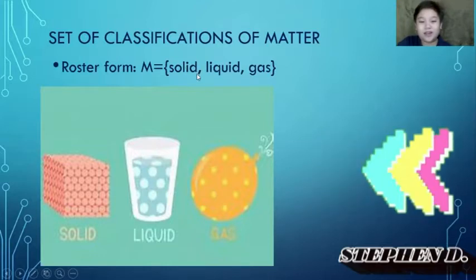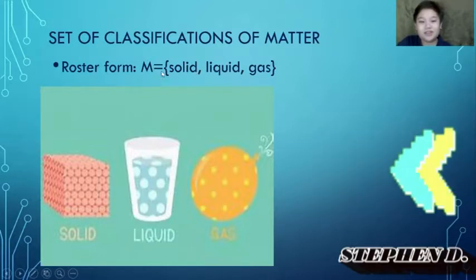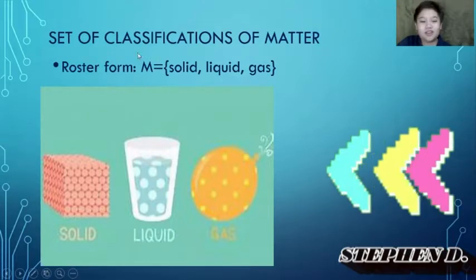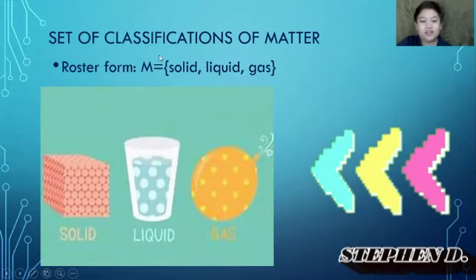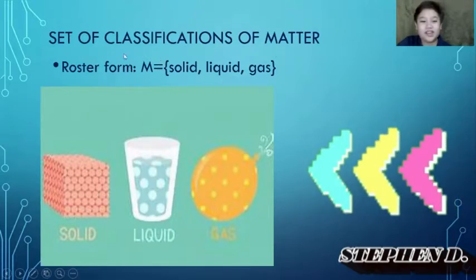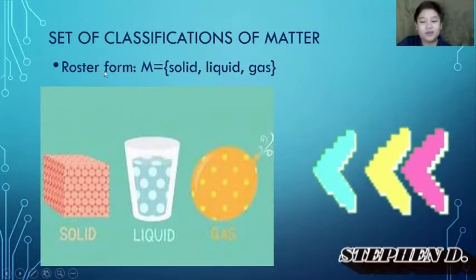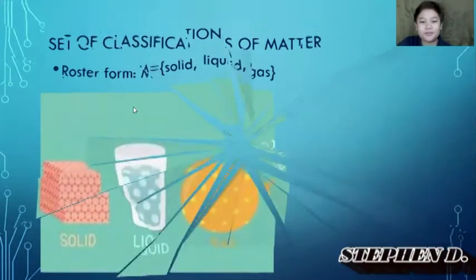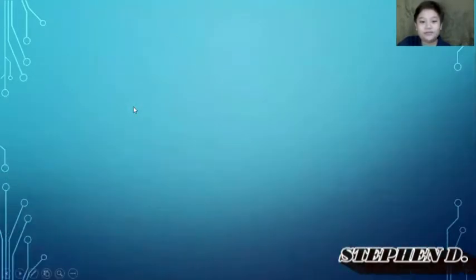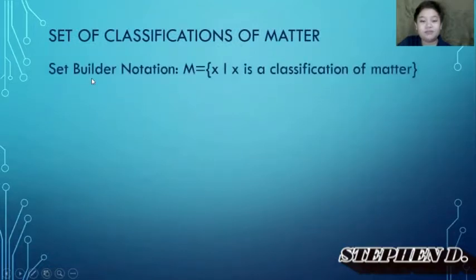The set name is written in a big letter. This is how you write it in roster form. The set builder notation is: M = {x | x is a classification of matter}.